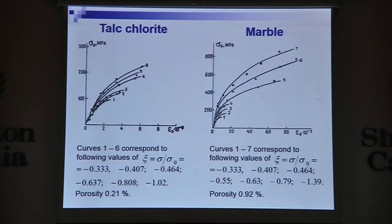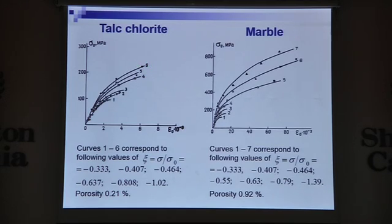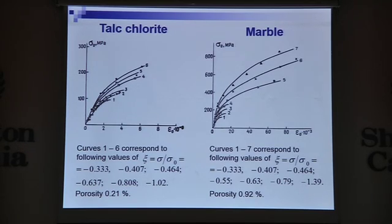Here you can see the stress-strain curves obtained for rock salt (halite) under the same conditions, and we have more curves for this material. Curve 1 corresponds to uniaxial compression and the others to triaxial compression. For white marble, instead of a single curve we have a fan of curves, and the separation between these effective stress-strain curves is significant.